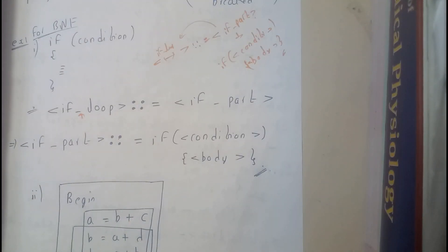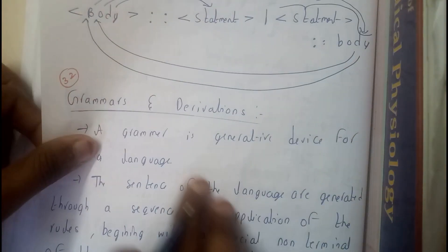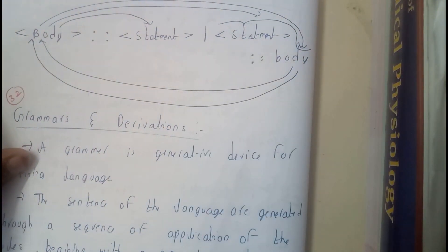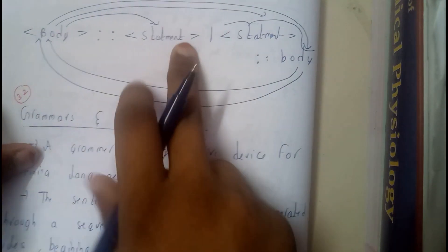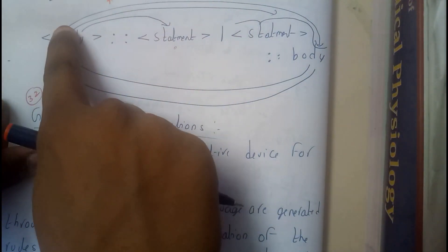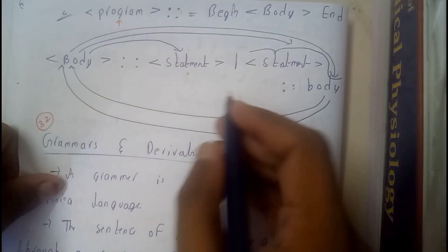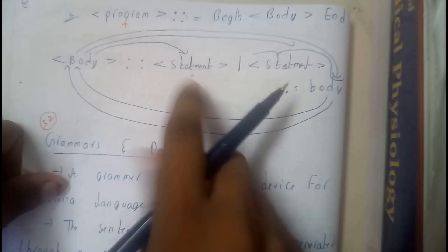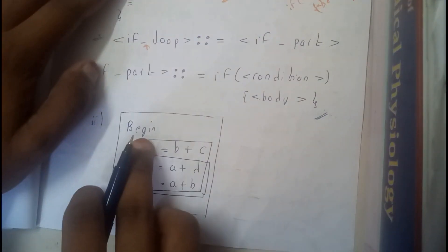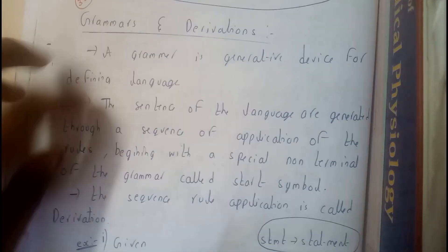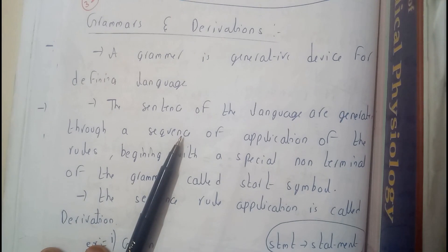You can write it in this format: body ::= statement | statement body, meaning if one statement exists the next statement also exists, so it continues into the body again and again. If there is only a single statement it ends right there. That is why it started, went through, came back, as many statements as there are it continues the loop showing statements like a = b + c, b = c + d, and so on. That is how the BNF notation works. In the next tutorial we will be going through grammar and its derivatives. Thank you for watching.